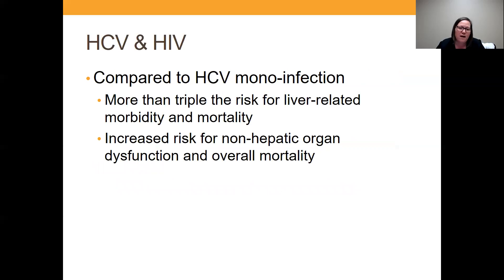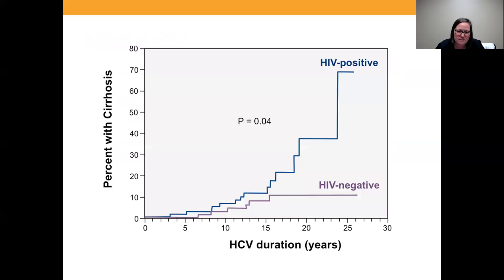Compared to patients who have mono-infection with hepatitis C, co-infected HIV and hepatitis C patients have more than triple the risk for liver-related morbidity and mortality — that's pretty substantial. That's why we need to really focus on making sure to get treatment for these patients. There's also an increased risk for non-hepatic organ dysfunction and overall mortality. HIV is an independently associated risk factor for advanced liver fibrosis and cirrhosis in patients who have that co-infection.